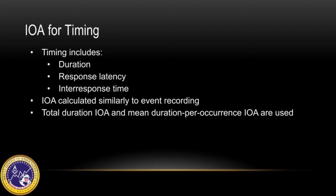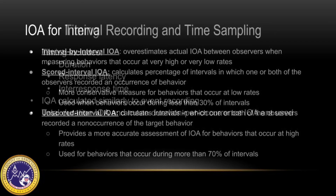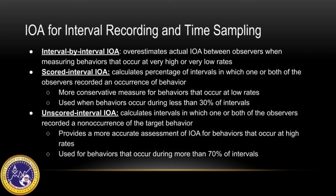IOA can also be calculated for data obtained through timing, which includes duration, response latency, and inter-response time. IOA is calculated similarly to event recording, using total duration IOA and mean duration per occurrence IOA. Additionally, IOA can be calculated for data obtained through interval recording and time sampling, using interval by interval IOA, scored interval IOA, and unscored interval IOA.